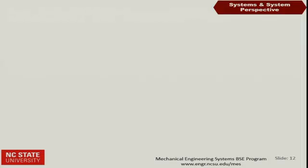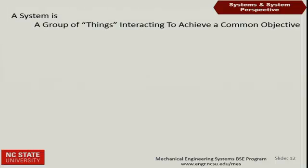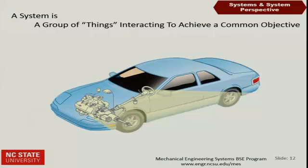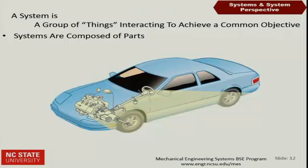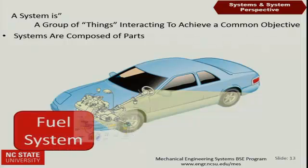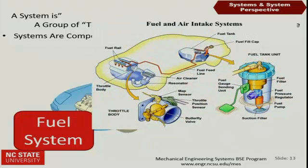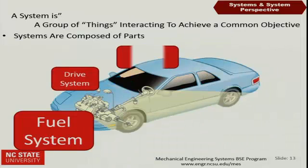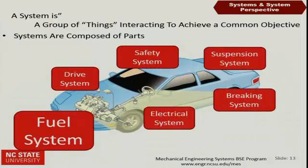When I say systems perspective, what do I mean? Let me start with defining a system. Here's my very technical definition: a system is a group of things interacting to achieve a common objective. So for example, a car — something we're very familiar with. Systems have some unique characteristics. First, systems are composed of parts. Like a car: tire, steering wheel, lights, gas tank, and so on. But typically when we talk about cars, we don't talk about parts like that. We talk about things like the fuel system — something that has many parts itself, each of which are composed of parts working together to perform a function. Or the drive system, the safety system, suspension system, braking, electrical. So systems are composed of parts, but usually those parts are systems themselves.